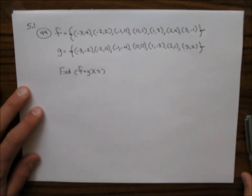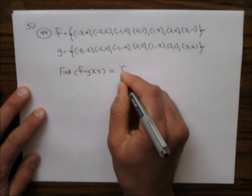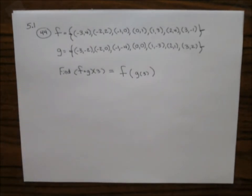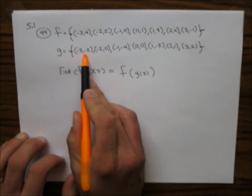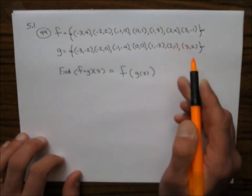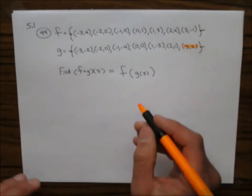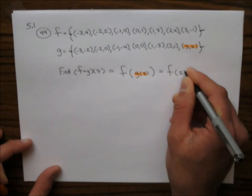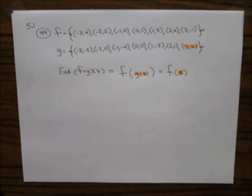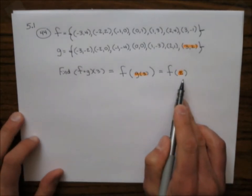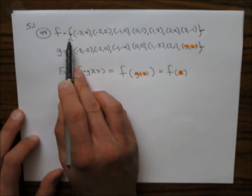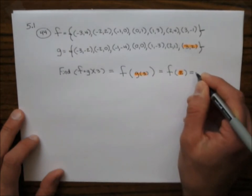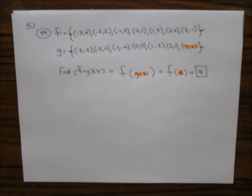Problem number 44: find f of g of 3. First consult function g to find g of 3 — looking at the table, g of 3 equals 2. Then find f of 2 from the f table — f of 2 equals 4. So f of g of 3 equals 4.